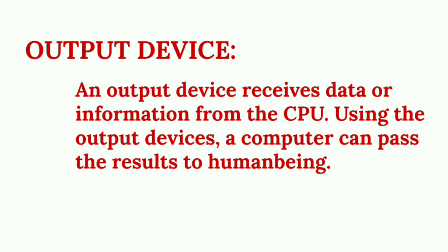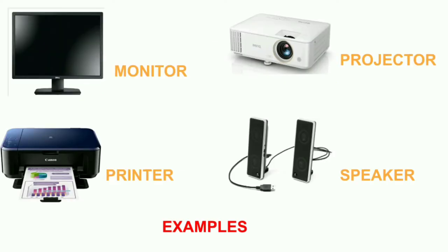Output device — an output device receives data from the CPU after processing. Remember the input-process-output cycle. Through keyboard and mouse we give input, it is transferred to the CPU, and after processing it is moved to output devices like monitor, printer, projector, speaker, etc.